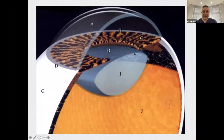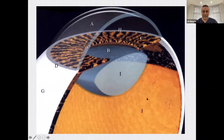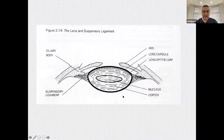Just a refresh of anatomy. This is a cross section of the eye. A is the cornea — the clear window at the front of the eye. The colored bit is the iris, labeled C. The lens sits behind the iris, labeled I, leading on to the vitreous J and then the back of the eye. The lens has a nucleus surrounded by cortical lens fibers, a lens capsule, and suspensory ligaments supporting it on either side.